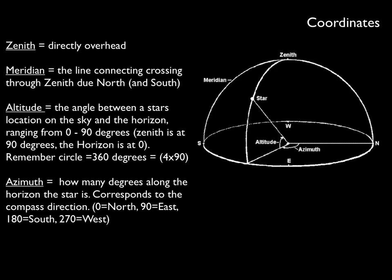The azimuth of a star is how many degrees along the horizon it is, and corresponds to the compass direction. Azimuth starts from exactly north, which is 0 degrees, and increases clockwise.